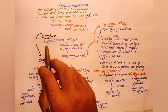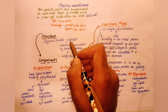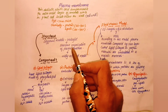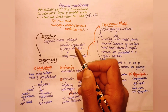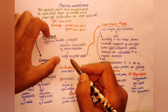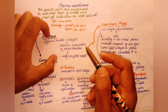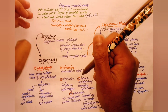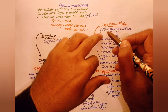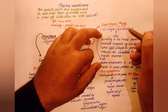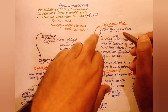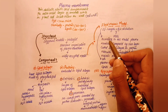Different models have been proposed by biologists to show the structure and organization of the plasma membrane. The most widely accepted model is the Fluid Mosaic Model, proposed by S.J. Singer and G.L. Nicolson in 1972.